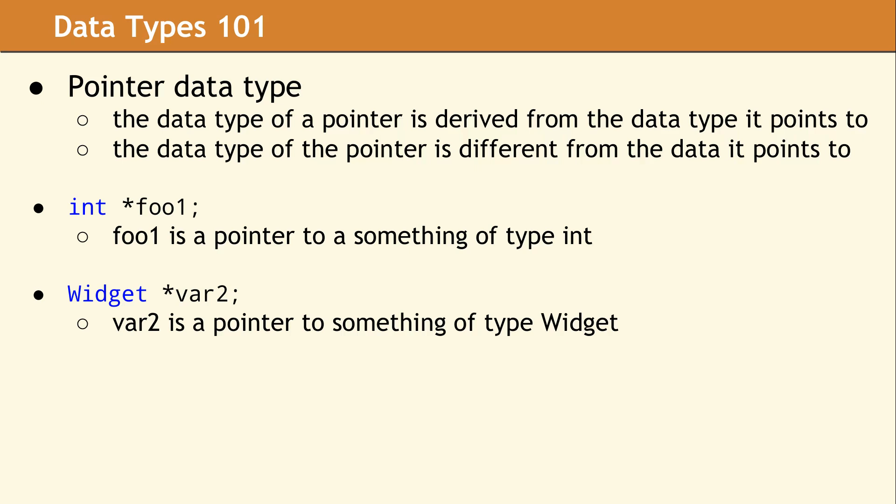The next category is a pointer data type. Foo1 and var2 are both part of the pointer data type category, but since foo1 points to an int and var2 points to a widget, foo1 and var2 are different data types, even though they're both part of the pointer data type category.